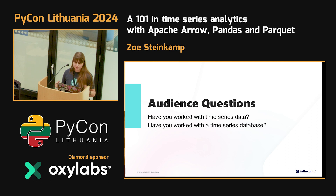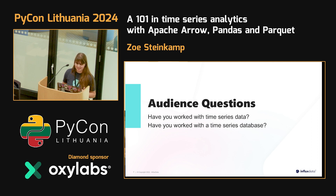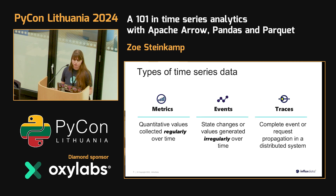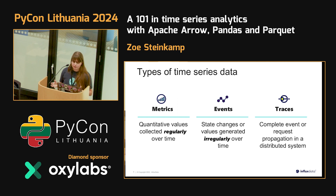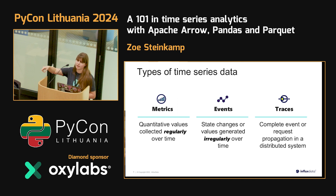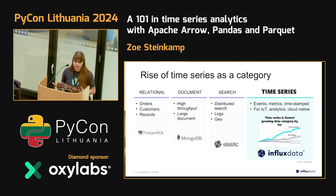About half the room has worked with time series data, and fewer have worked with a time series database. Time series data comes in three types: metrics, which are regularly collected — think of a Fitbit constantly tracking your heart rate, temperature, and breathing; events, which are irregularly created, like a server alert; and traces, which are complete events — for example, clicking a shopping cart button that calls many things including your backend and Stripe. All of that is time series based, just with more metadata.